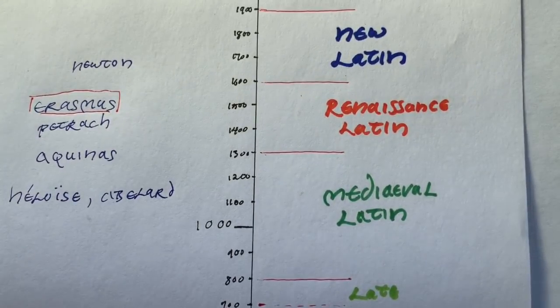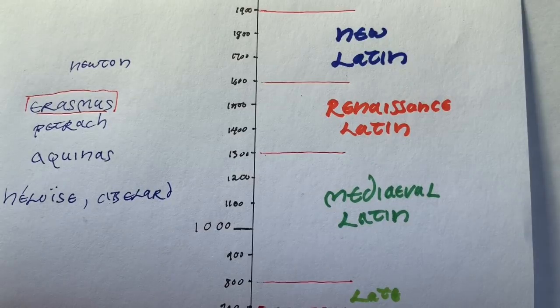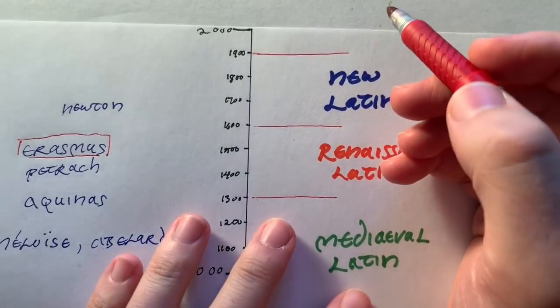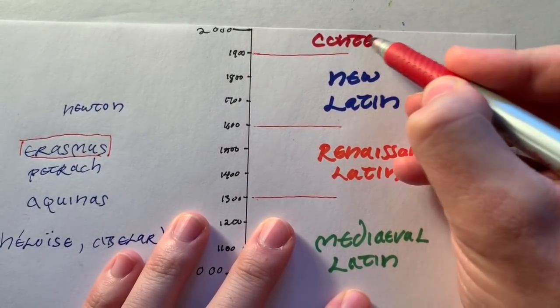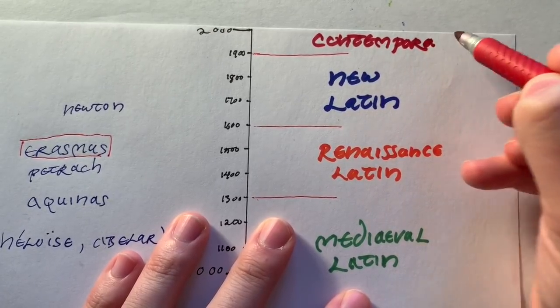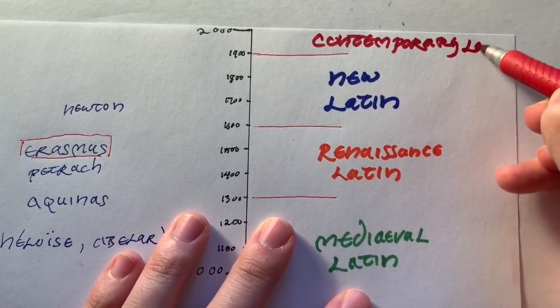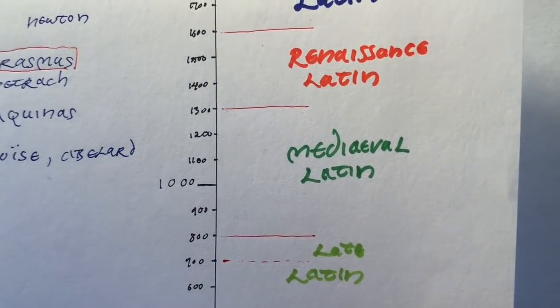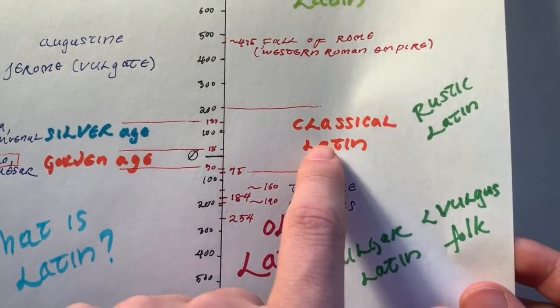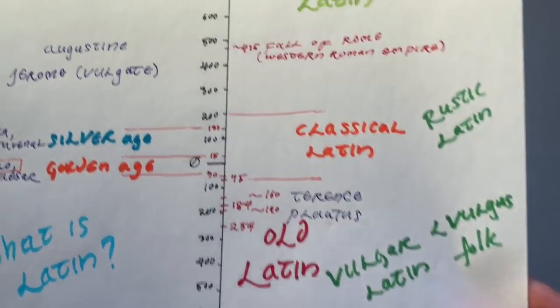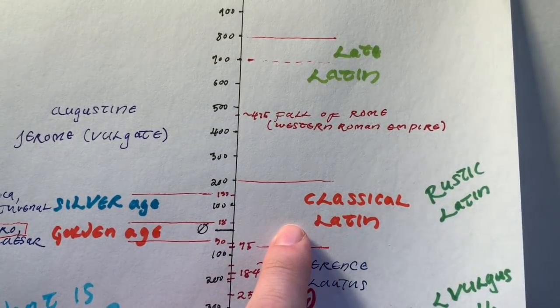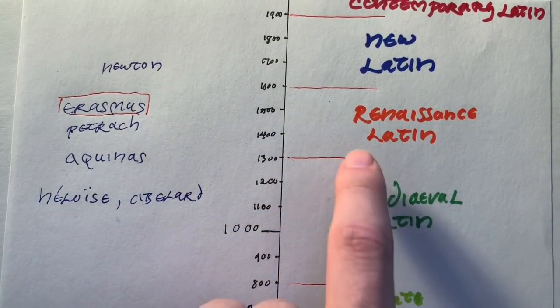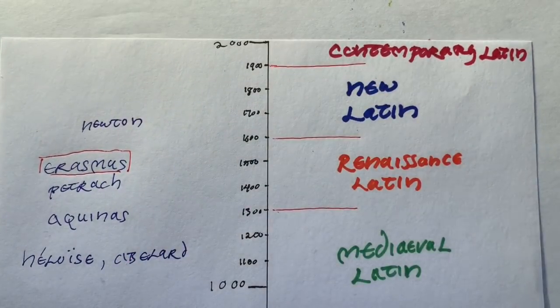After the new Latin period, we get to the 20th century and on to the current period. We just call this contemporary Latin. Contemporary Latin, new Latin, Renaissance Latin - all of the best authors here are looking back at the classical Latin. I use this color scheme deliberately. The classical being this golden color, the Renaissance being golden to associate it with it because they are closely related.